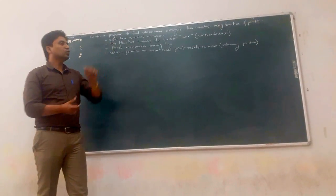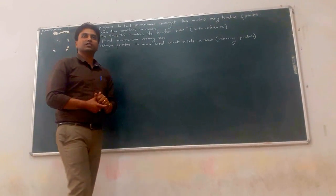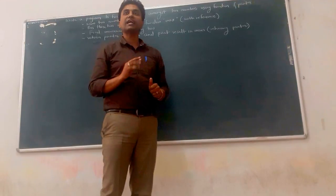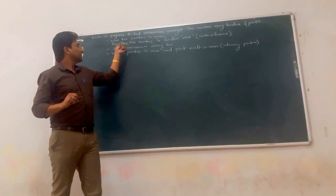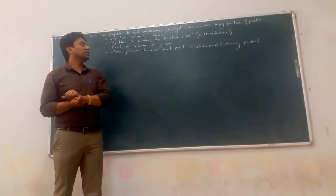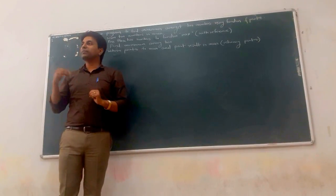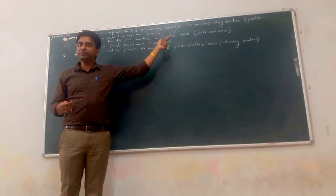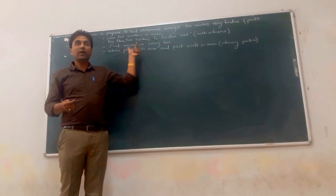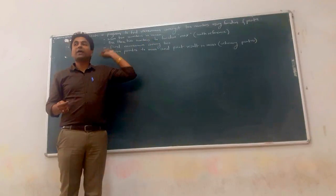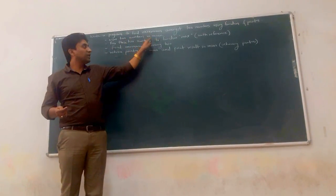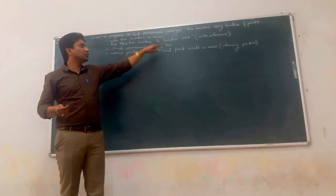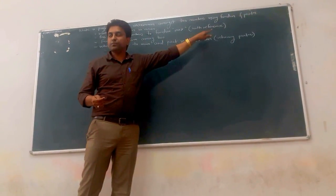We have to scan two numbers in the main function, then pass these two numbers to the function named max. But how to pass these two numbers to the max function? With reference — meaning we pass the address of these two numbers.